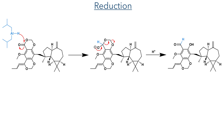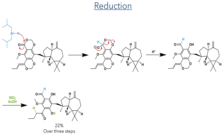In the next reaction, the remaining ester was reduced using DIBAL, which adds a hydride to the carbonyl, forming a tetrahedral intermediate. This collapses to break apart the dioxinone ring upon the elimination of formaldehyde. The product was then stirred in DCM with acetic acid and silica scraped from a TLC plate. This served to hydrolyse the remaining dioxane ring, with the enol tautomerising to the more stable ketone.